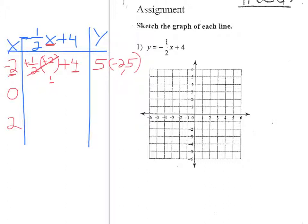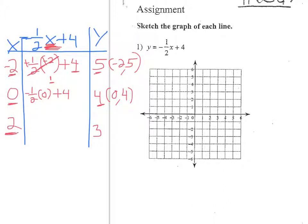If you plug in 0 for x, you're going to have negative 1/2 times 0 plus 4. Well, anything times 0 is 0, and then when you add 4 you get 4. So this is (0, 4). You can kind of see the pattern — we went from 5 to 4, so we're probably going to get 3 here. If I plug 2 in for x, I have negative 1/2 times 2 plus 4. These 2's cancel but we get negative 1. And negative 1 plus 4 gives me 3. So this ordered pair is (2, 3).